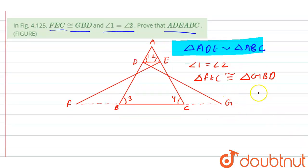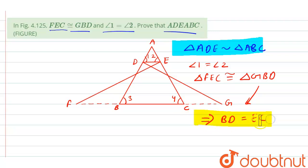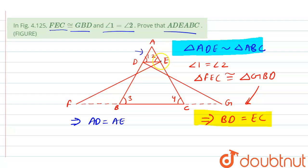From the congruence of the triangles, this implies that BD equals EC. Also, since angle 1 equals angle 2, this implies that AD equals AE, because the sides opposite to equal angles are equal.